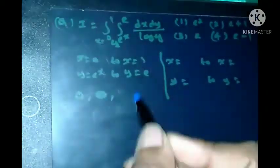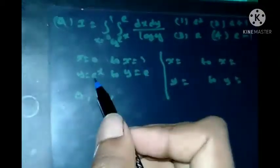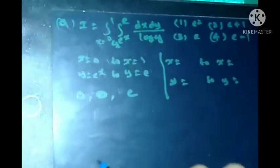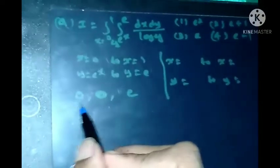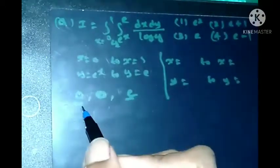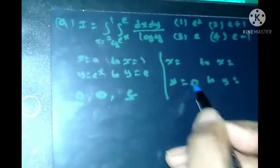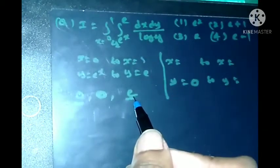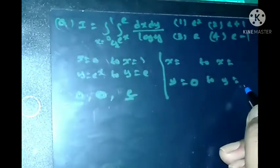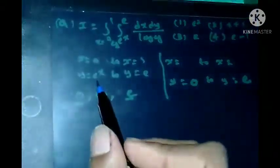Substitute e^0, we get 0. No change, 0 only. And we substitute here 1, we get e^1, which is e only. Then which value is lower? 0 is lower, we write it down here. And which value is higher? e is higher value, we write it down here. This is the trick.